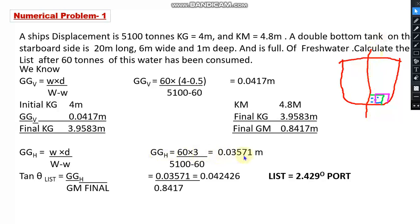So GGH I will get as 0.03571 meters. And if you take the formula for list, the formula for list is GGH/GM_final. This is the formula for list. So if I substitute our GGH value which I got now and the final GM value which we got earlier, I will get this value. So tan θ is this value, which means θ I will get as 2.429 degrees.